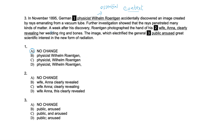Now looking at the next part: 'A week after his discovery, Röntgen photographed the hand of his wife, Anna, clearly revealing her wedding ring and bones.' If you cut out the name Anna, it doesn't affect the rest of the sentence, so Anna is non-essential here. The purpose of this question is to show how important context is. In this scenario, Anna is non-essential, so option A with commas around the name is correct. Now for the last sentence: 'The image, which electrified the general public, aroused great scientific interest in the new form of radiation.'